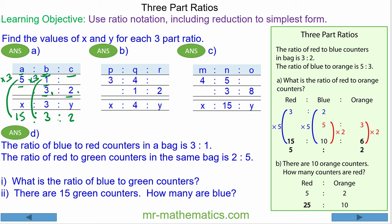For question b, we have p to q is 3 to 4, and q to r is 1 to 2. We already know that for every 4 q we have 3 p.